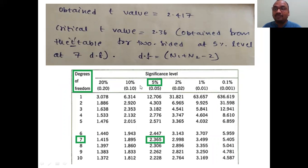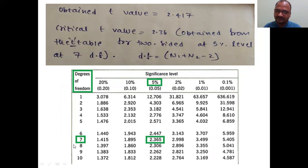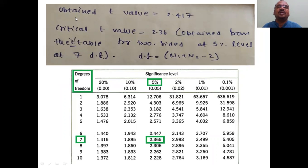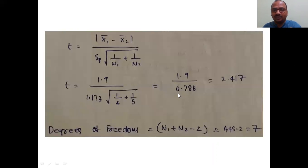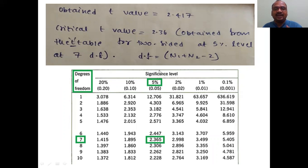The t-table for Type 3 is different from those used for Types 1, 2, and 4. Using degrees of freedom = 7 and significance level = 5%, we look up the table and get a critical t-value of 2.365. The obtained t-value we calculated is 2.417, compared to the critical table value of 2.365.